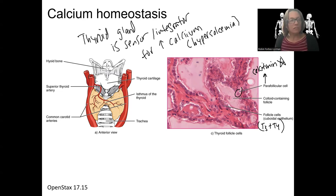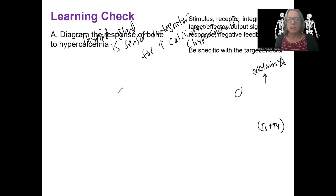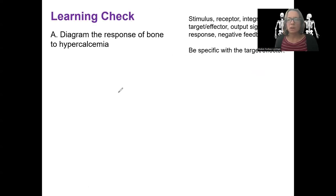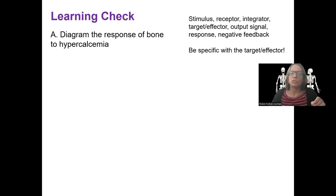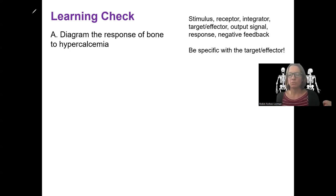I think you've got the information you need to do this diagram yourself. Draw out the response to high plasma calcium, and just focus on the bone — what's going to respond in the bone?